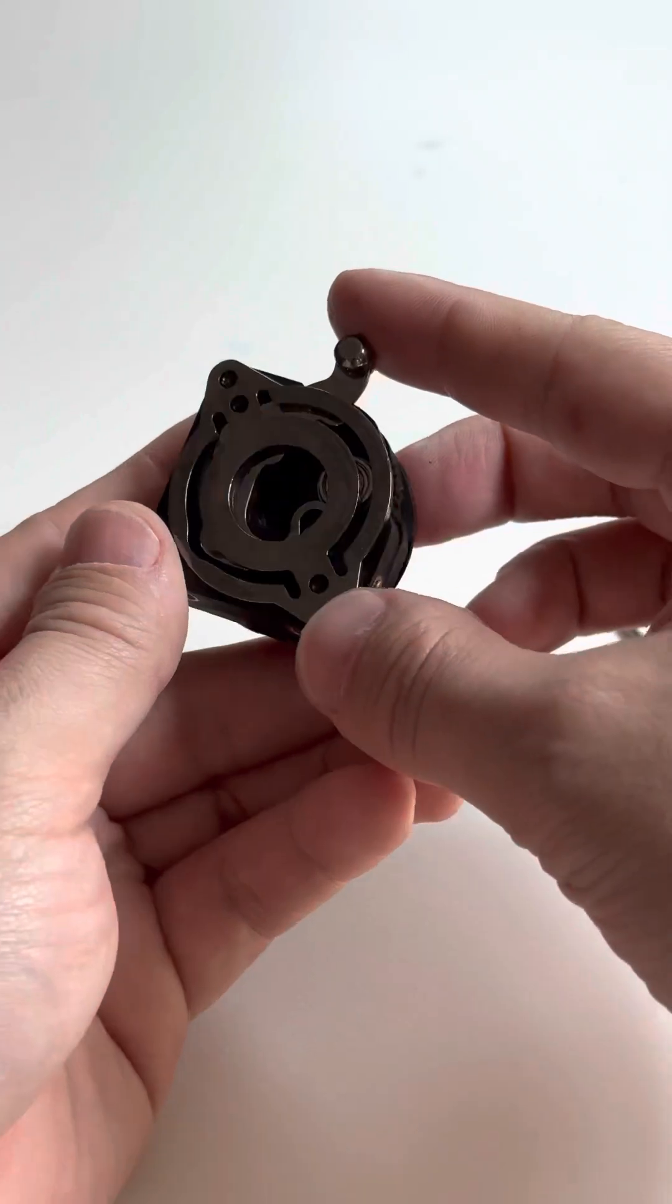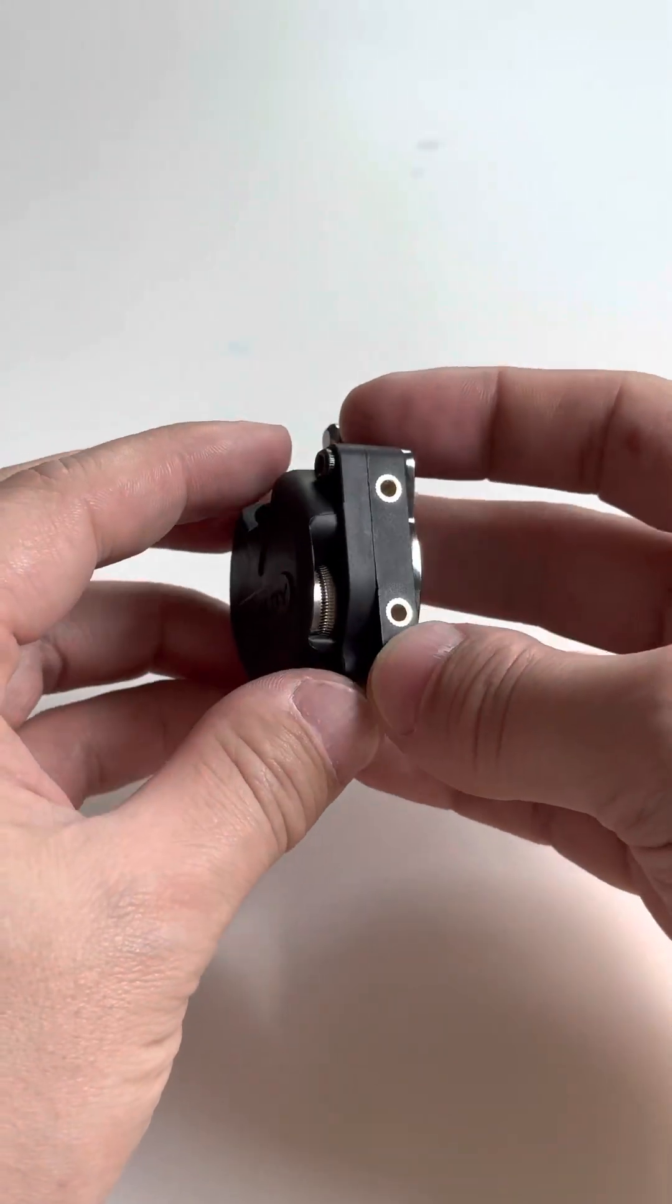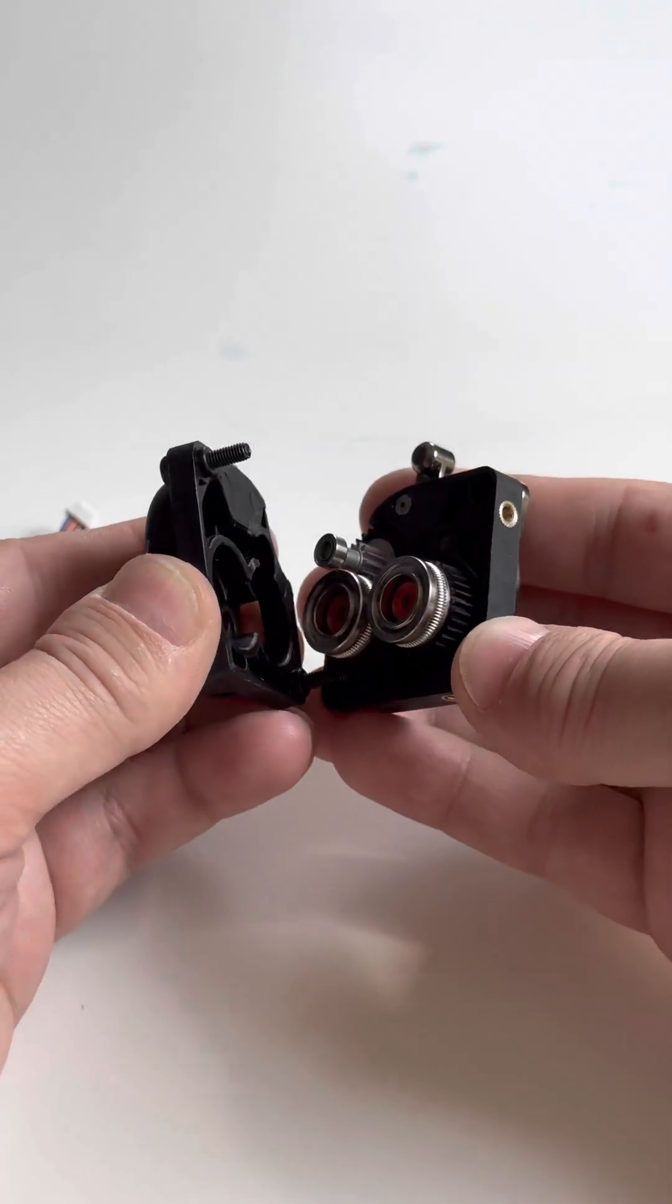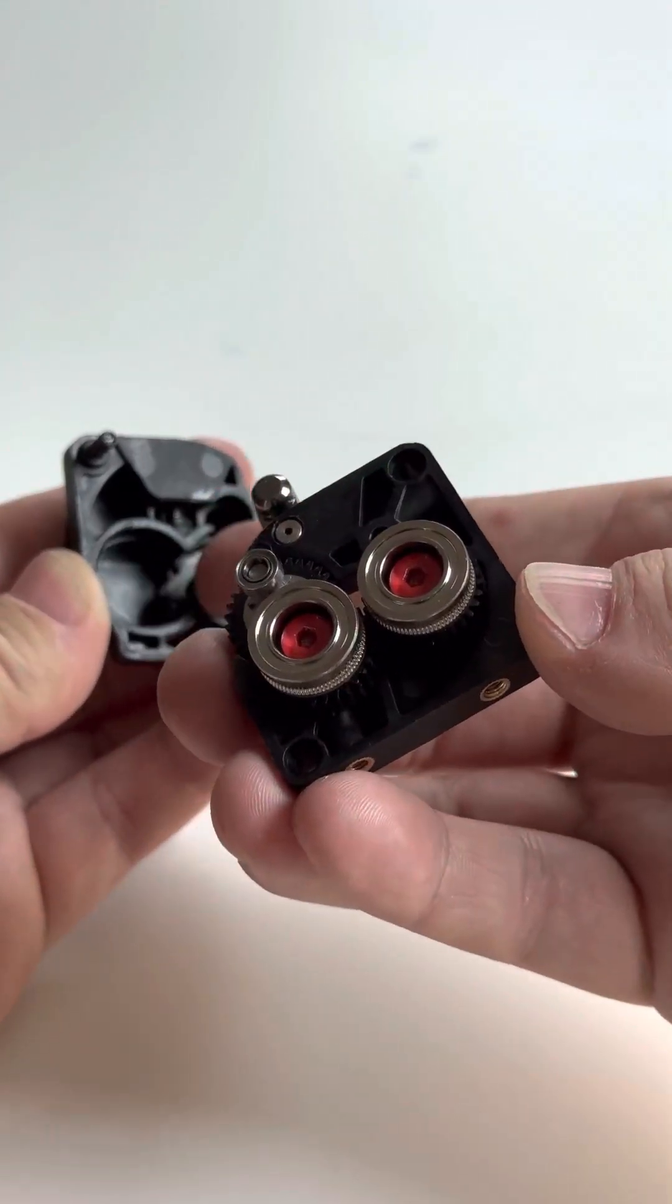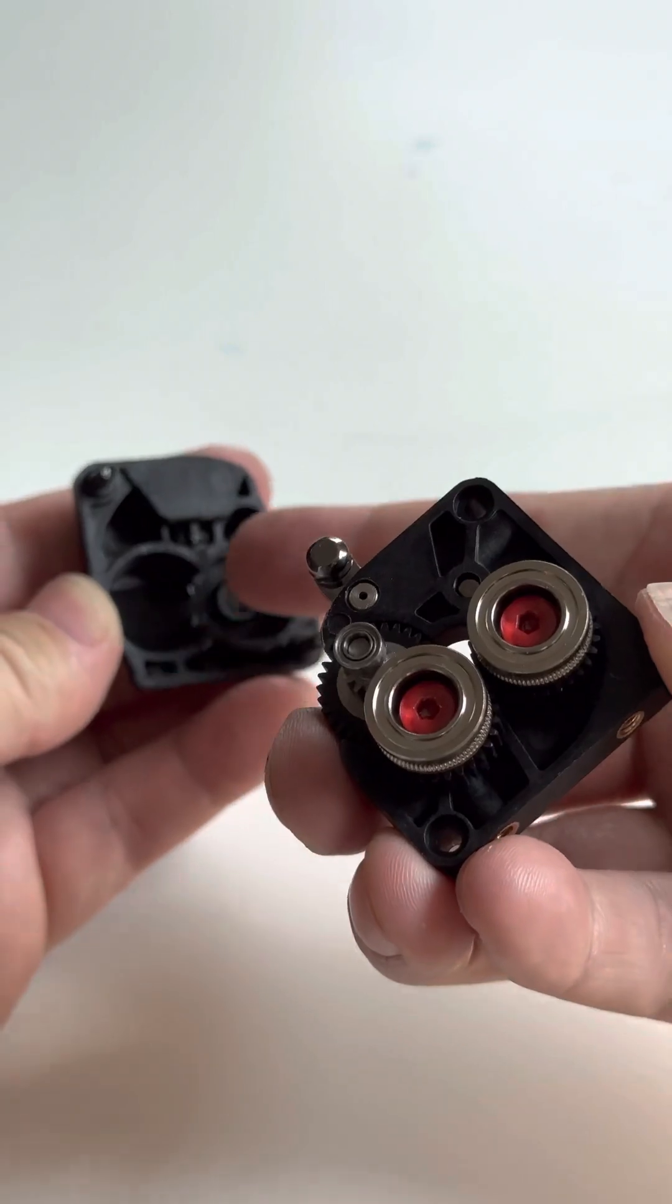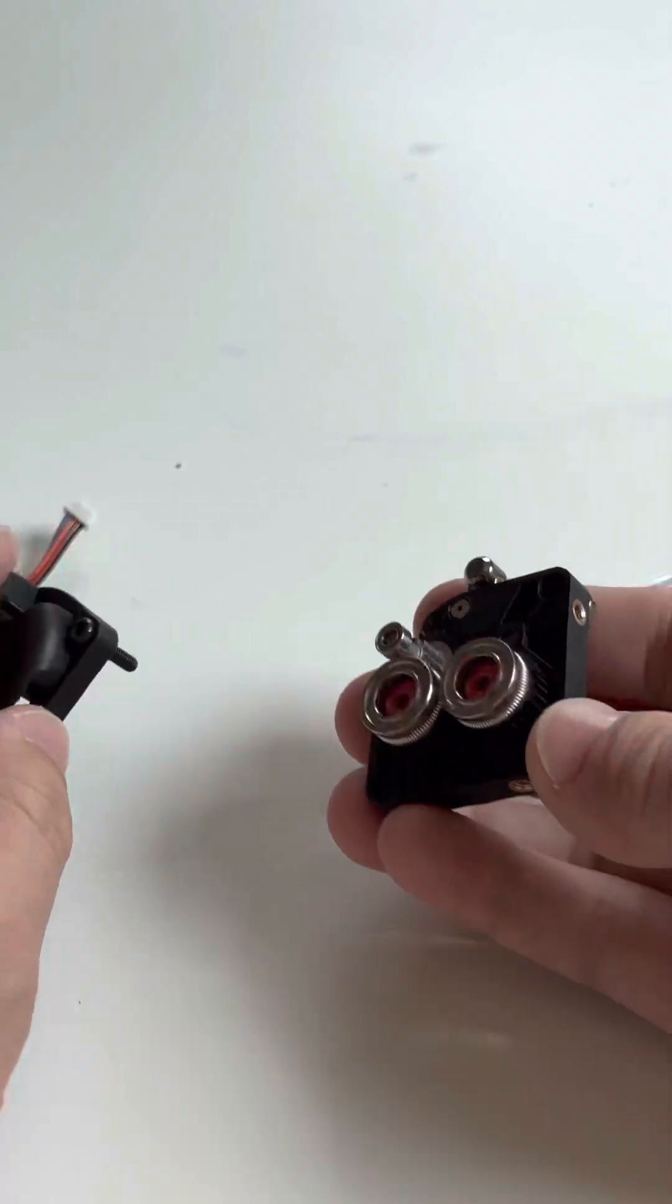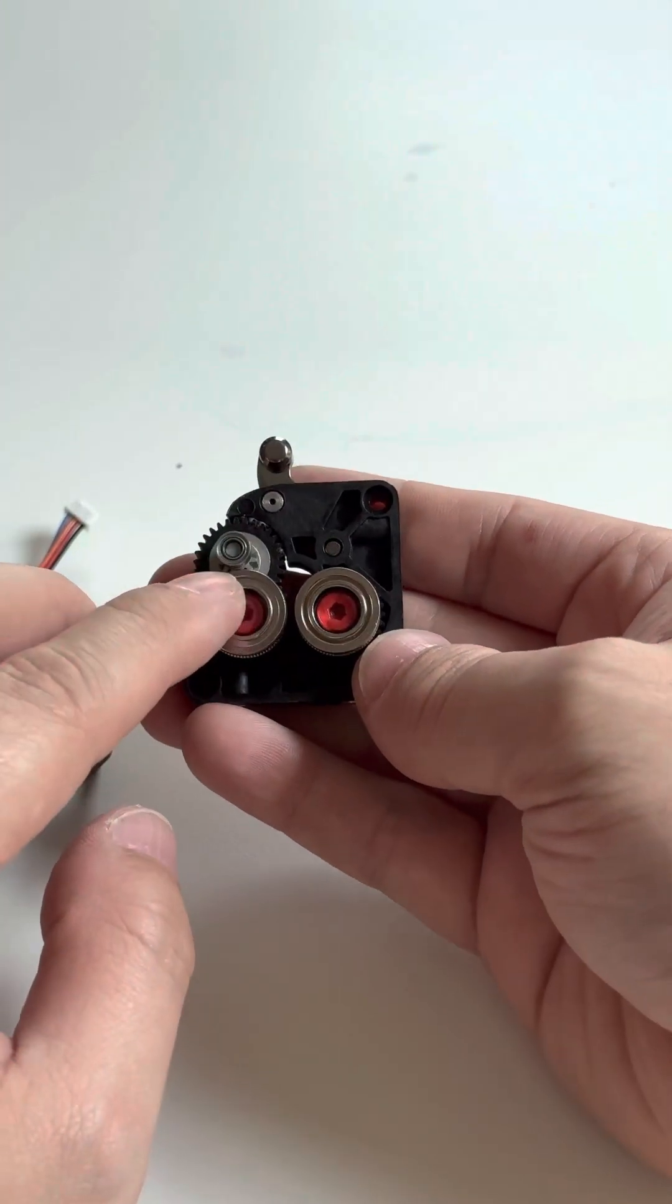And if you look at this extruder, this whole gearbox thing, it's made out of two injection-molded pieces. If you take it apart, you can see this is just essentially a gearbox housing. And it's also a filament guide. So that guides the filament into the extruder and out the bottom.